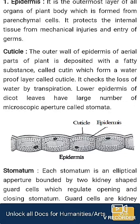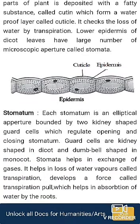The lower epidermis of dicot leaves has a large number of microscopic apertures or pores called stomata. This is a diagram showing one cell thick epidermis with the outermost cuticle. Note that there are no intercellular spaces in the epidermis.